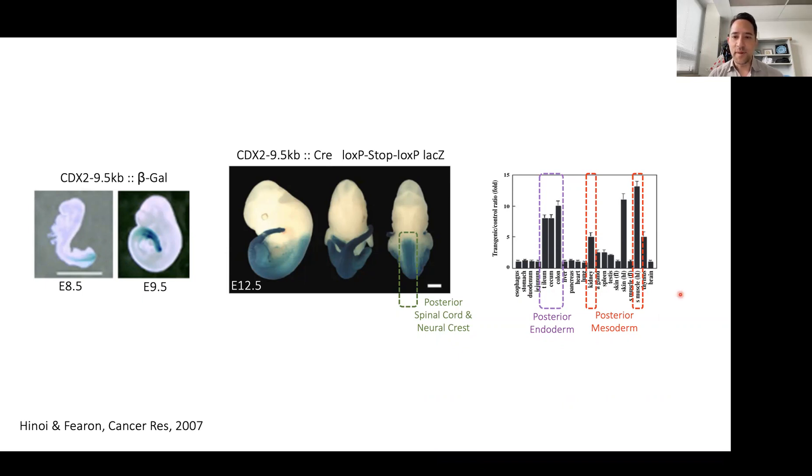This pattern across these three germ layers whereby anterior structures were not labeled but posterior structures were labeled from this CDX2 transgene actually reflects two different phases in embryogenesis by which the embryo builds itself during development.